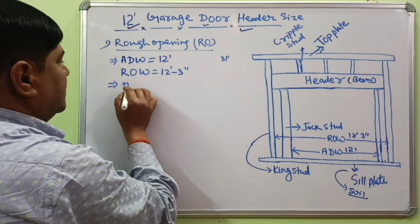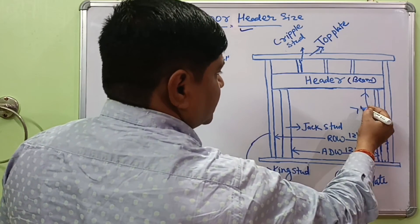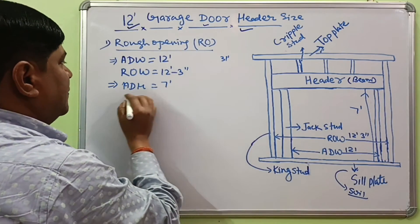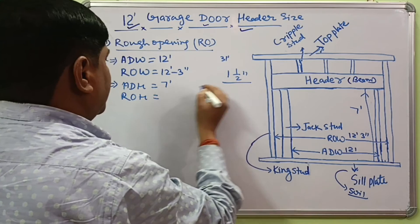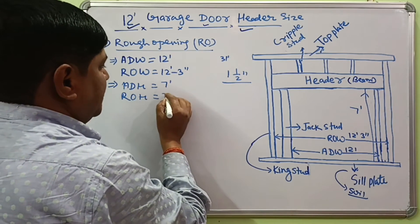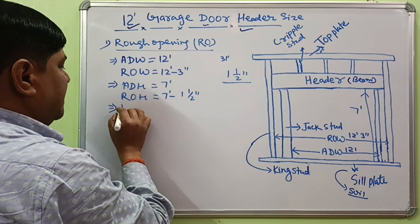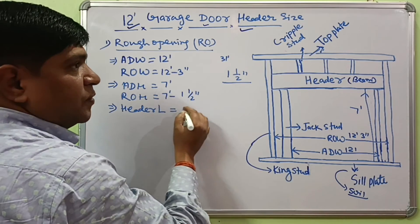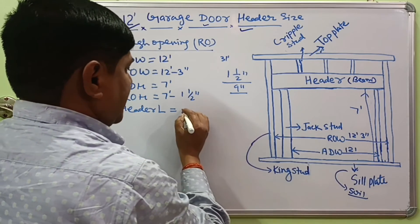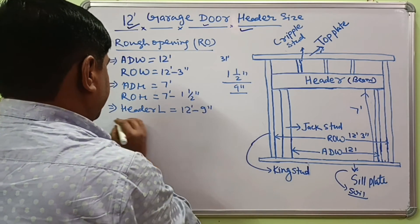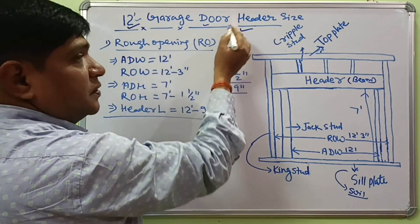The actual door height is about 7 foot, and the rough opening height will be 1 and a half inches more. The header length will generally be 9 inches longer than the actual door width, so it will be 12 foot 9 inches. This is the rough opening for installation of a 12-foot garage door.